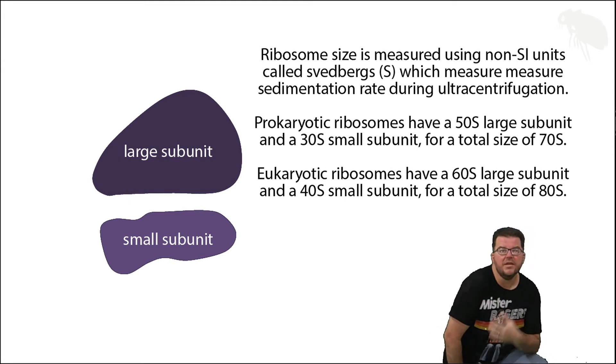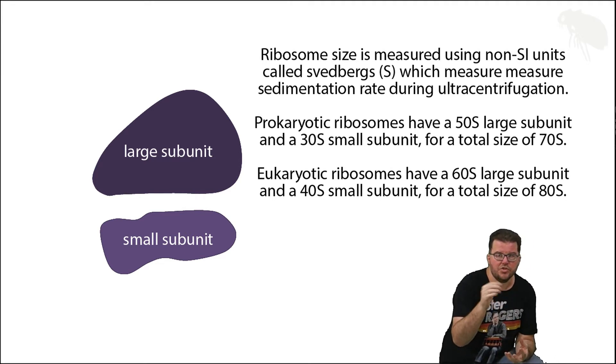Now, eukaryotes have a 60S large subunit and a 40S small subunit, which adds up to an 80S whole ribosome. And it's also worth noting plastid organelles in eukaryotes have their own ribosomes which are closer in size and structure to the prokaryotic.